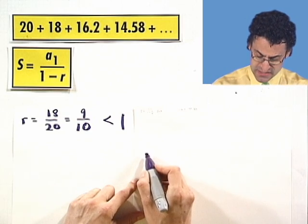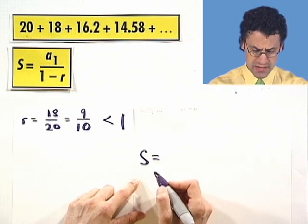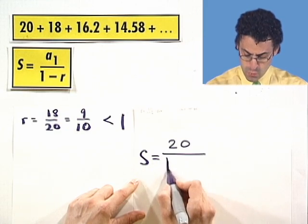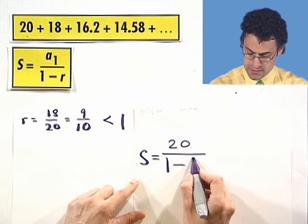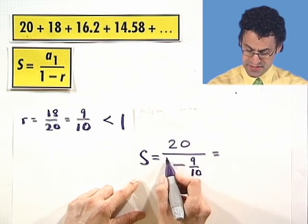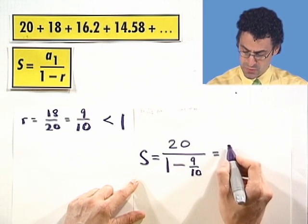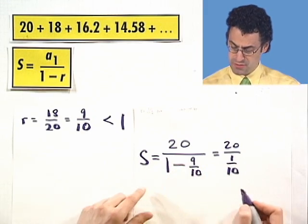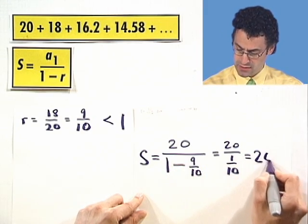So in this case, we see that the sum is equal to the first term, 20, divided by 1 minus 9 tenths. And so what is that? Well, 10 tenths minus 9 tenths is 1 tenth. When I take the reciprocal and multiply, I see 200.